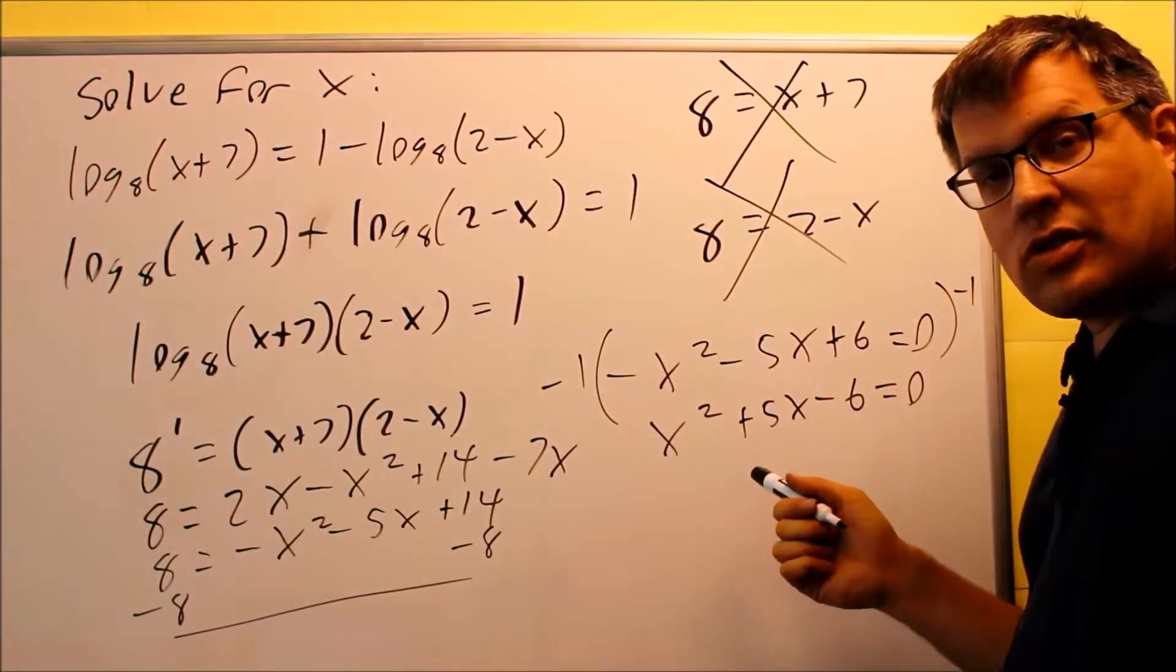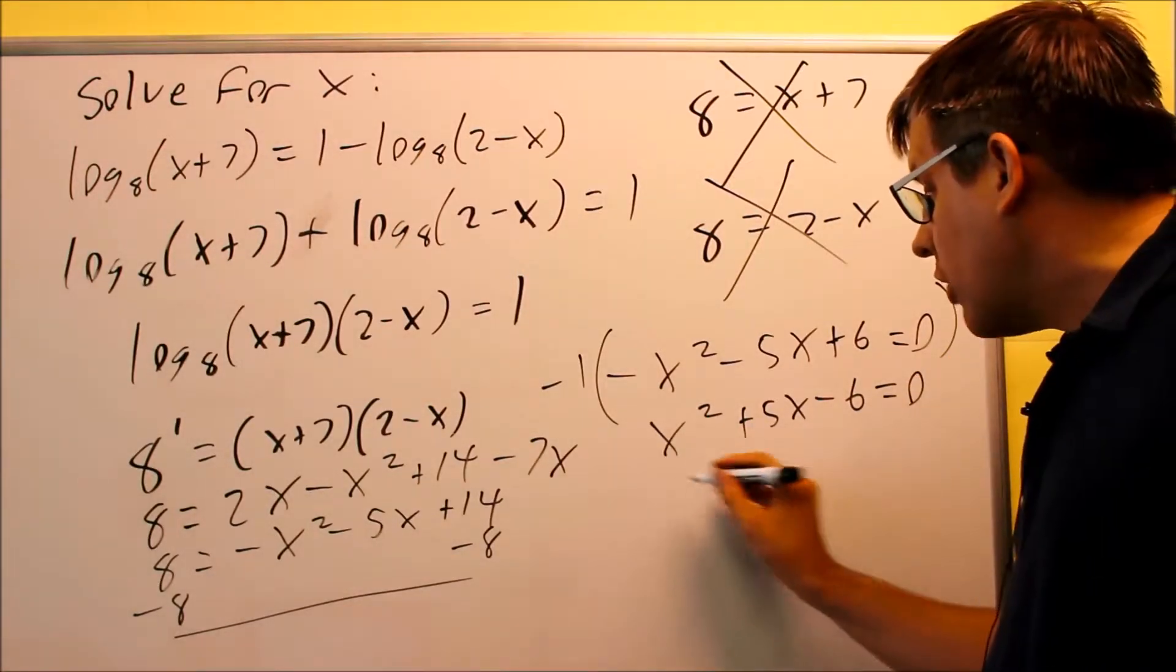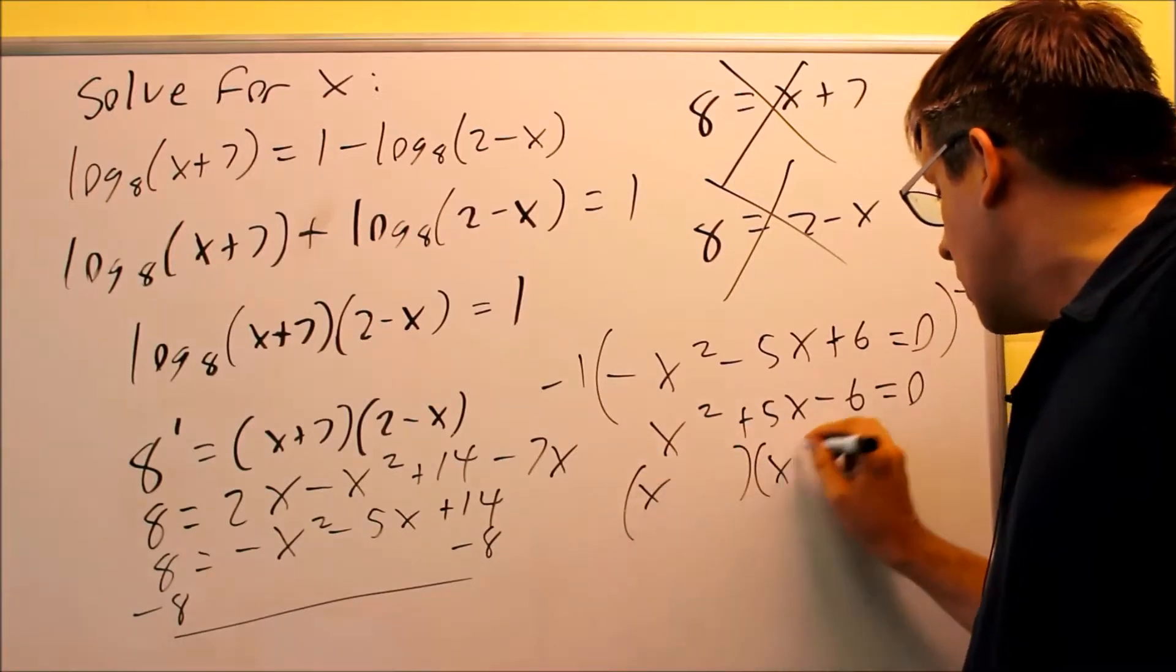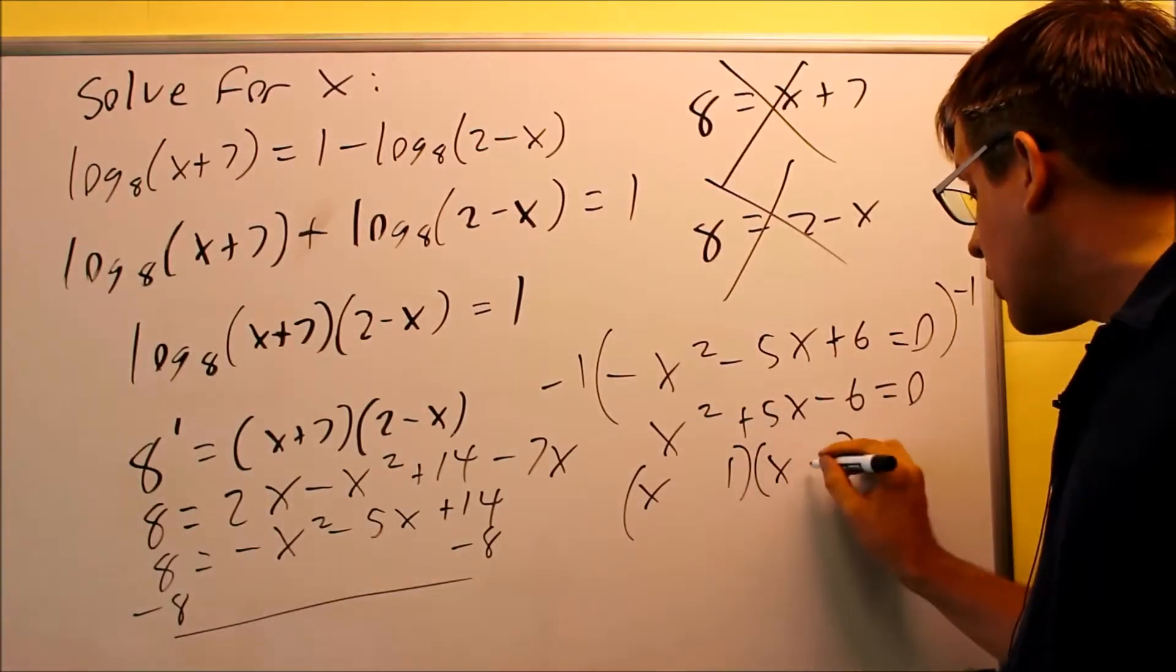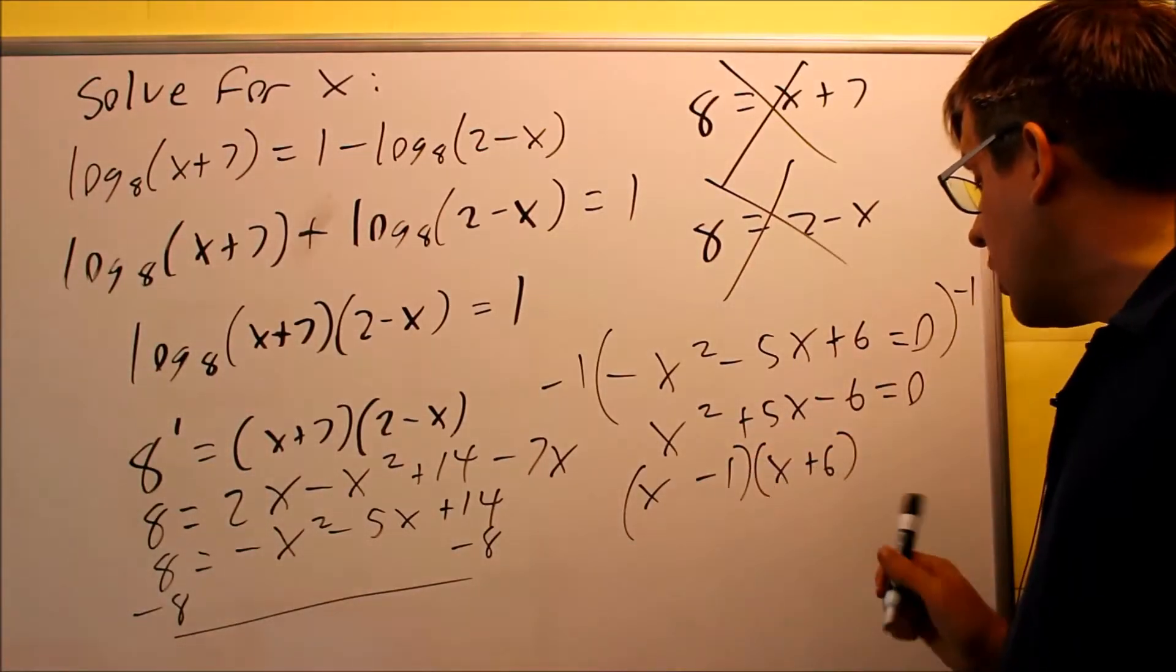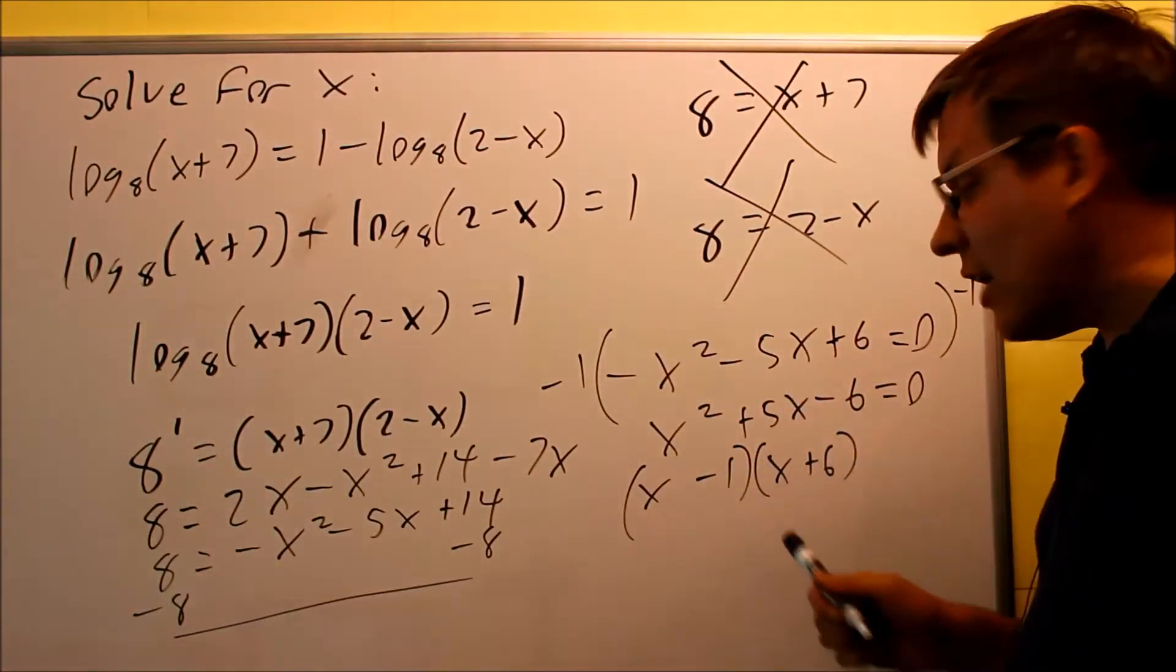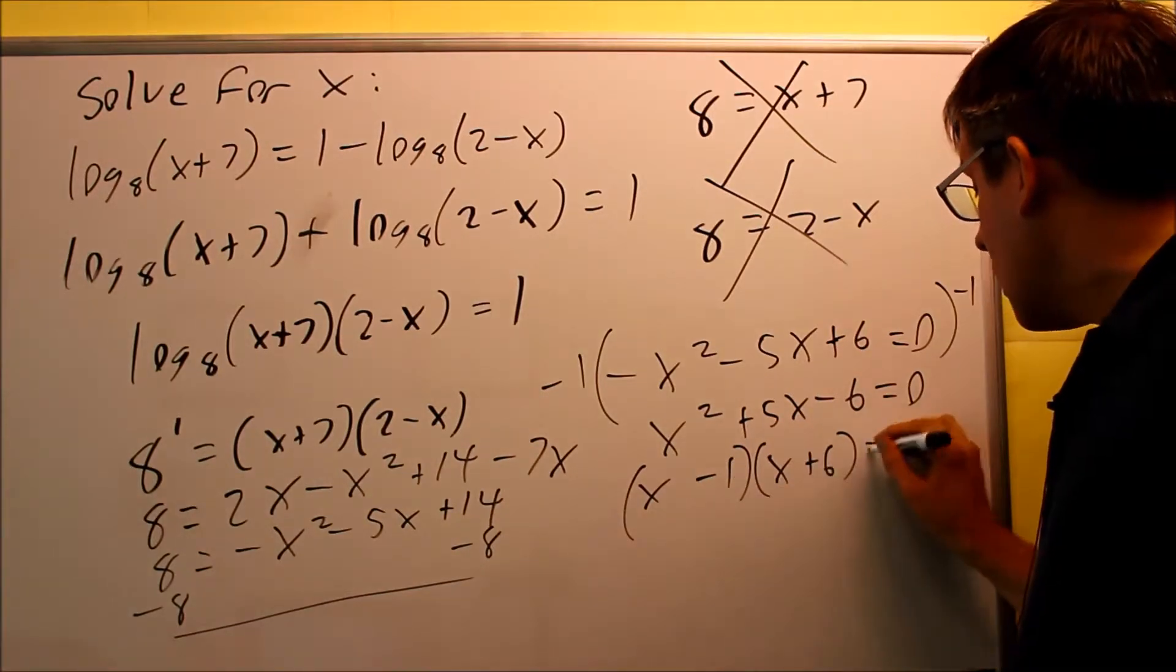And you get x squared plus 5x minus 6 equals 0. So now it's going to be easier to factor because we've got a 1 in front of there. Factoring both of these, we're going to get 1 and 6. You want a 5, so you're going to do a plus 6 and a minus 1. 6 minus 1 will give you the 5. And if you multiply them, you get negative 6.